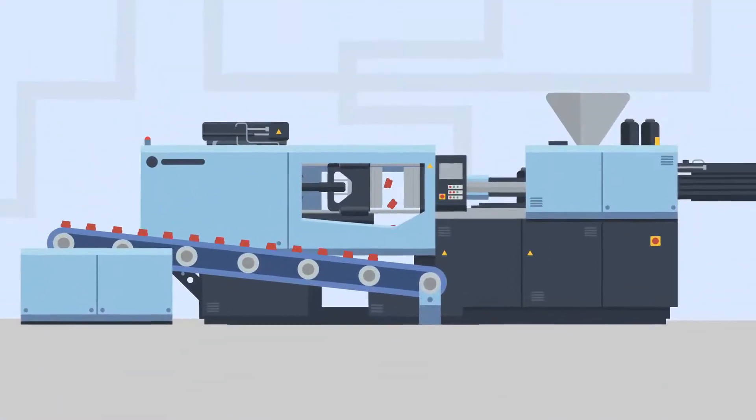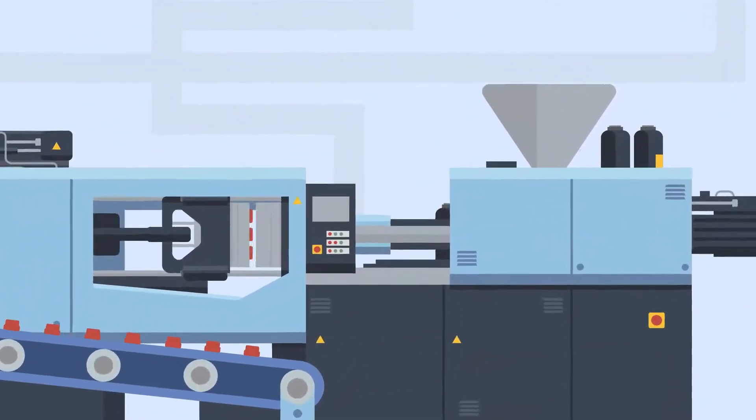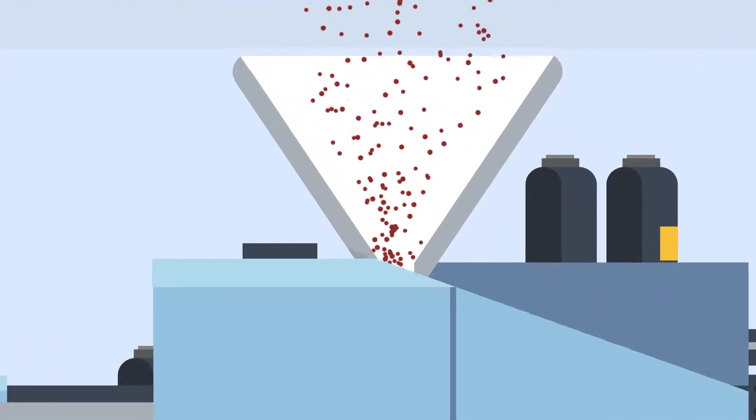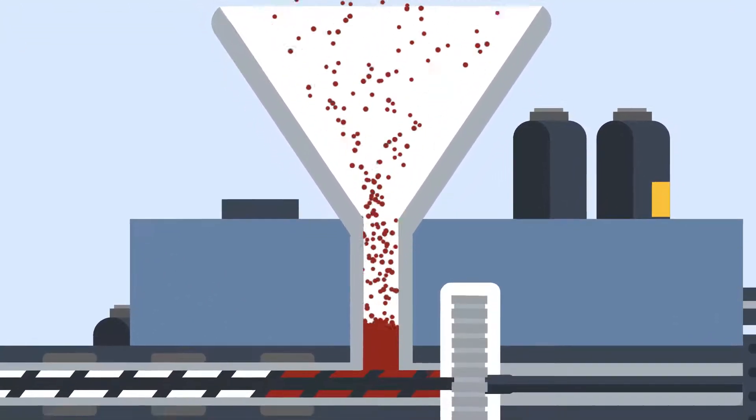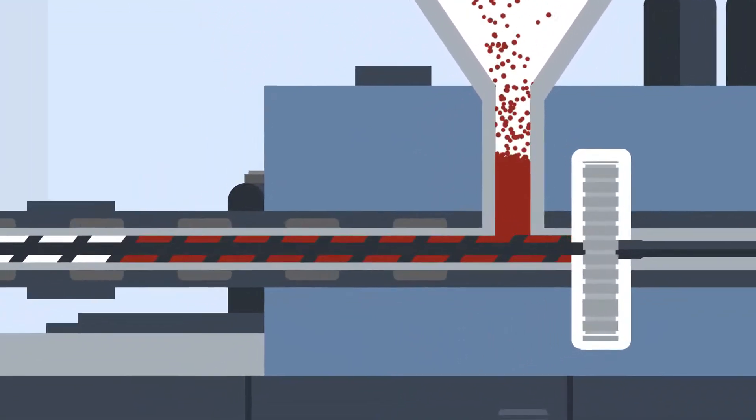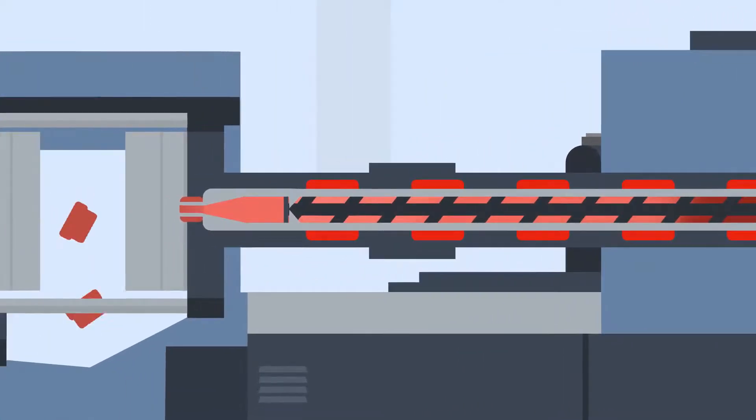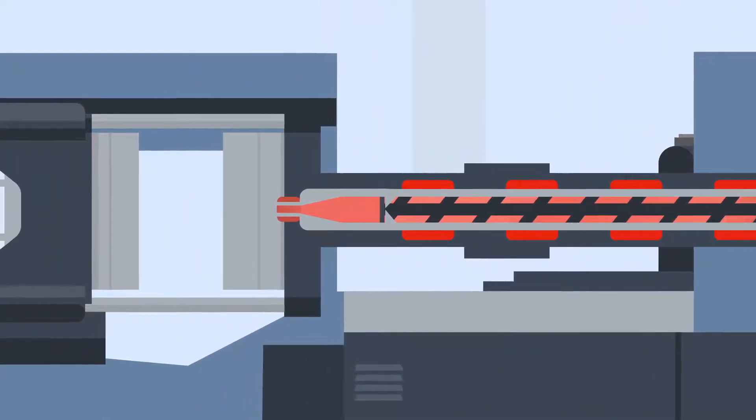So let's take a look at how the injection molding process works. First, raw plastic pellets are poured into the hopper at the top of the machine. This can be one type or a combination of different plastics. The pellets are then heated within a temperature-controlled cylinder, called the machine barrel, until it is molten.